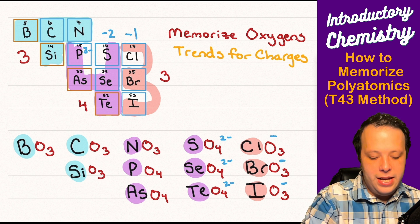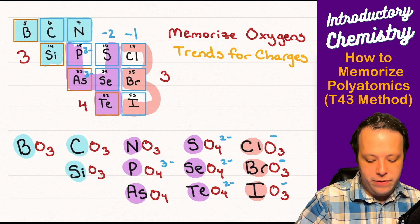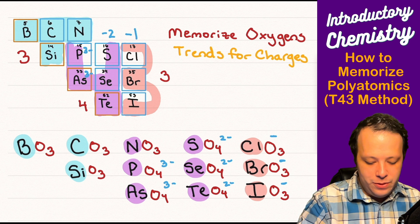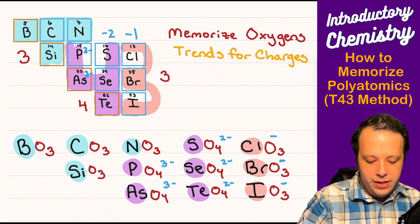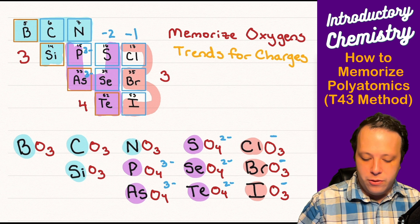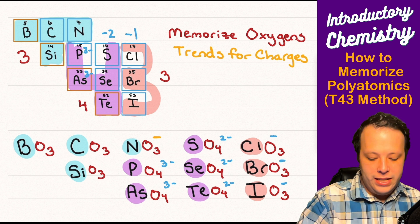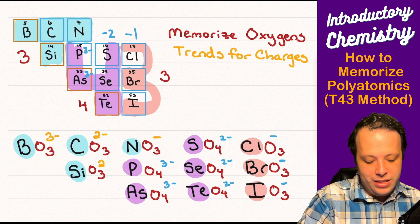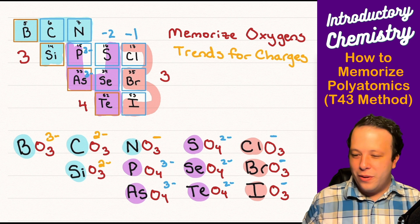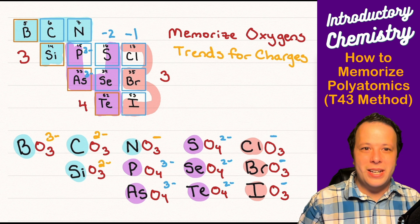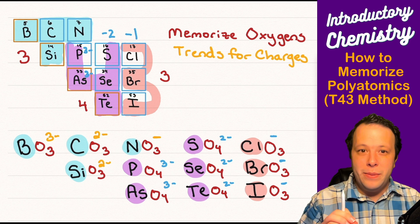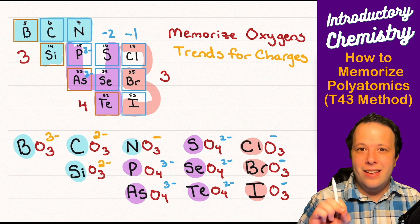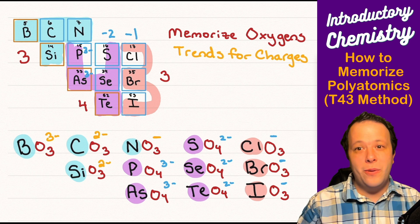So phosphate and arsenate are still three minus they go off the rule but things kind of reset on the T area which I realize this is miscolored here. So on T we kind of reset our trend. So nitrate is negative one carbonate is negative two and then borate is negative three. So it sort of goes backwards in order as we're going through these different trends. Okay so this is how you can quickly be able to memorize them. It goes off your periodic table trends or ion charges and you can use a T43 to quickly be able to know how many oxygens.